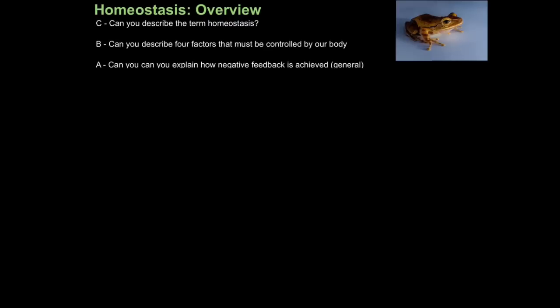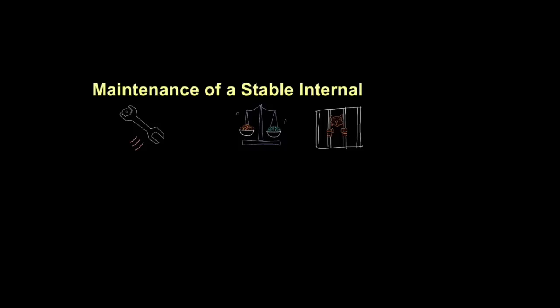Animals need to maintain a specific set of conditions inside their body to keep alive. This is called homeostasis. So I'm going to give you the textbook definition for homeostasis. If they ask you in an exam what is homeostasis, this is exactly what you should say. Maintenance, so I've drawn a spanner fixing something there. Of a stable, so I've drawn some scales there. Internal, so I've drawn someone in prison there. Environment, so obviously our world there.